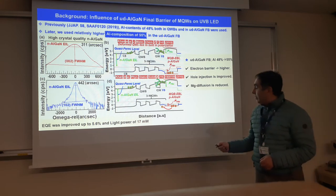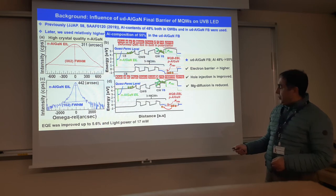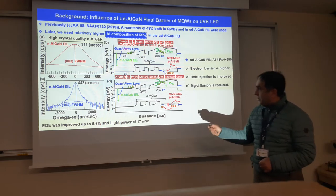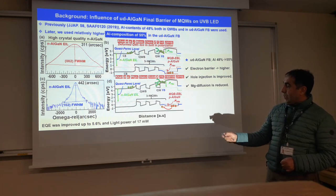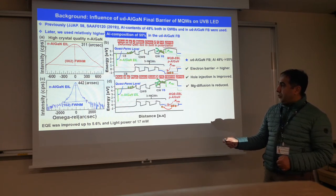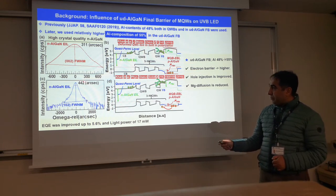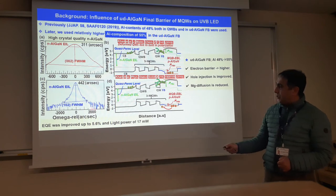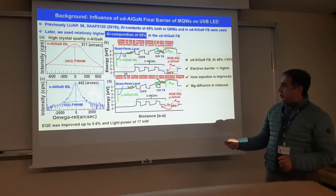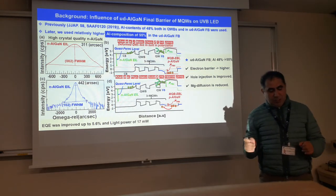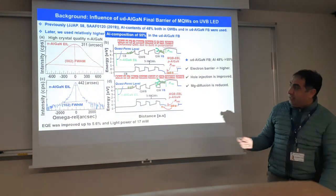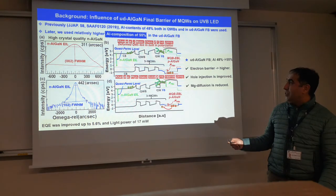This is not the only story — we also used very good crystalline quality in the electron injection layer. We measured by XRD rocking curve, where the 002 reflection and 102 are given. Very nice, low dislocation density-based N-AlGaN layer was achieved.